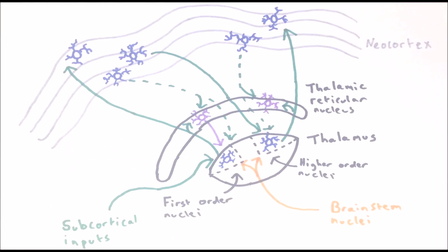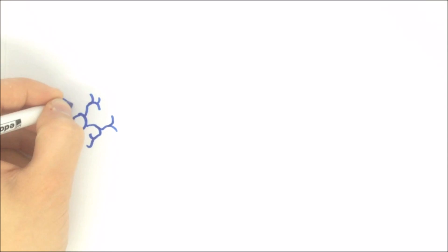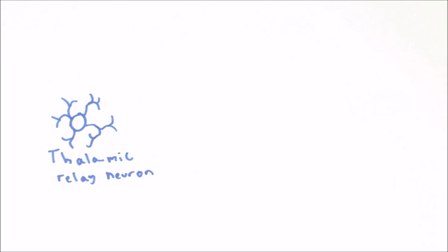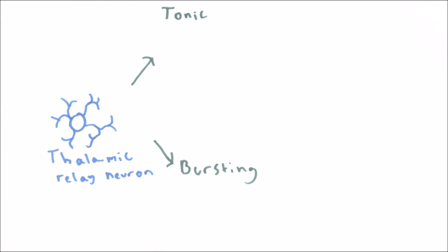Other modulatory input to the thalamus comes from a number of brain stem nuclei which stimulate thalamic nuclei with the neurotransmitter acetylcholine. To fully understand how the system works we need to understand a special property of thalamic relay neurons: their ability to shift between two different modes of firing — tonic and bursting.